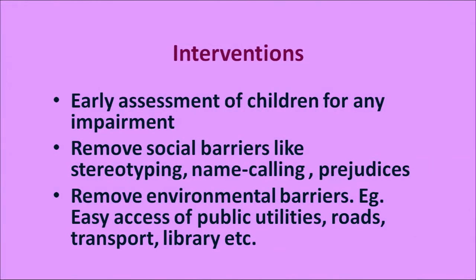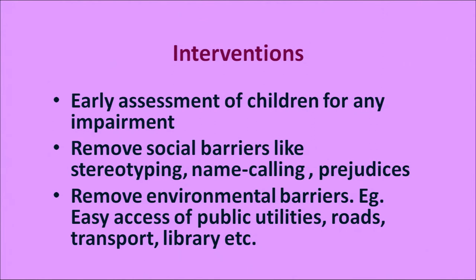What are the possible interventions? Early assessment of children for any kind of impairment is very necessary and will help find ways to sort it out, take care of it, and train the child to handle such impairment. Remove social barriers like stereotyping, name calling, and prejudice — we should never give any disability-related nickname to any person. Remove all environmental barriers and provide easy access for public utilities on roads, transport, library, etc.